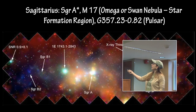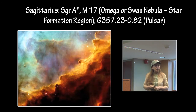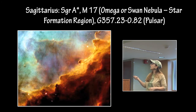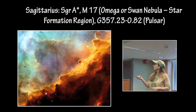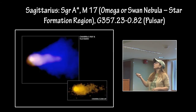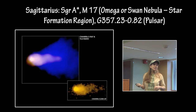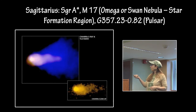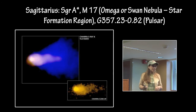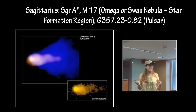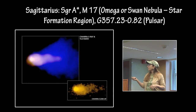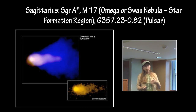Up here we have M17, called the Omega Nebula — sometimes listed as the Swan Nebula. It is a region of star formation. Here we have G357.23-0.82, the pulsar that Chandra called 'the mouse that roared' in the public release on the Chandra website. This is a little isolated pulsar, all by himself, whipping through space fast enough to produce a bow shock and a shockwave following behind it.